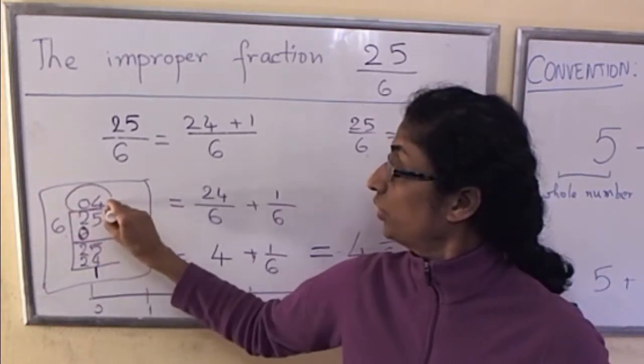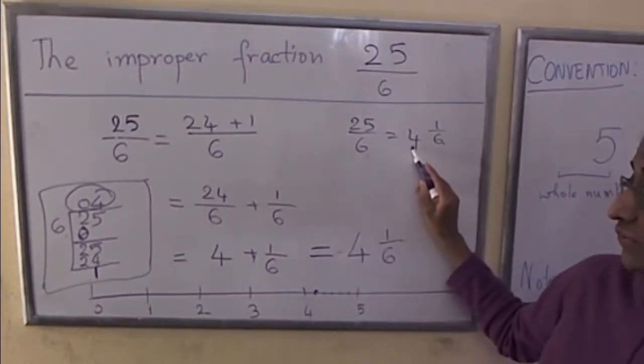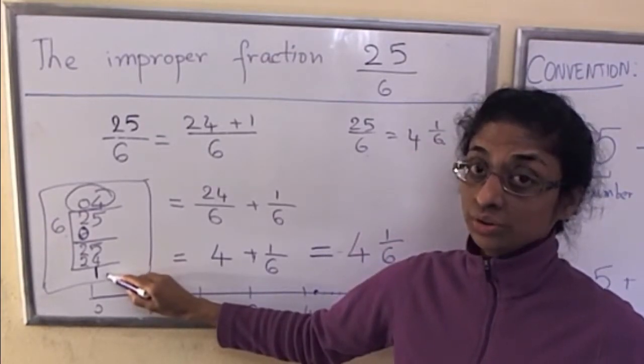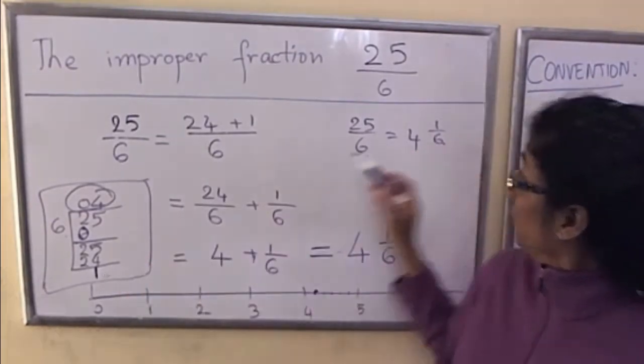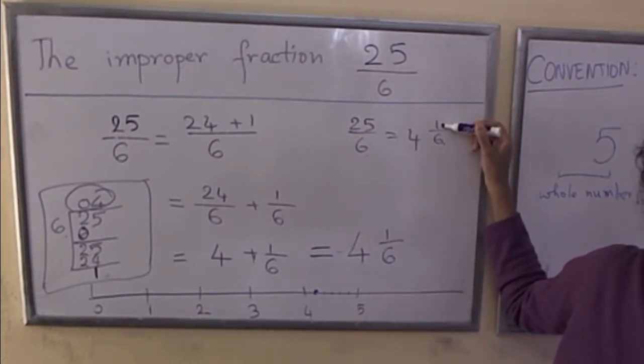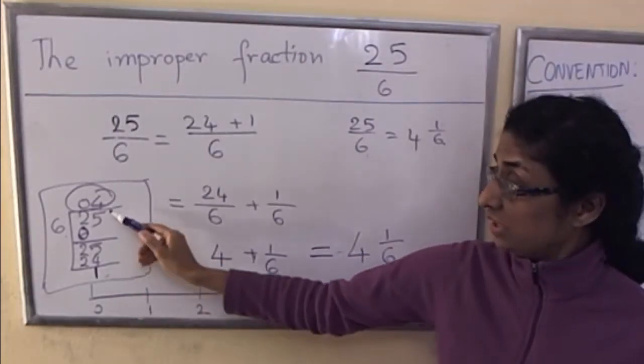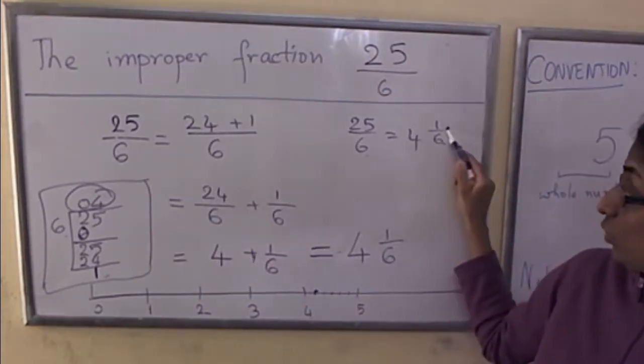And so you see this 4, the quotient, is this 4. This remainder 1 in this long division with remainder, that's this 1. So if you prefer to write it all out, you can do the long division and get your 4 and 1.